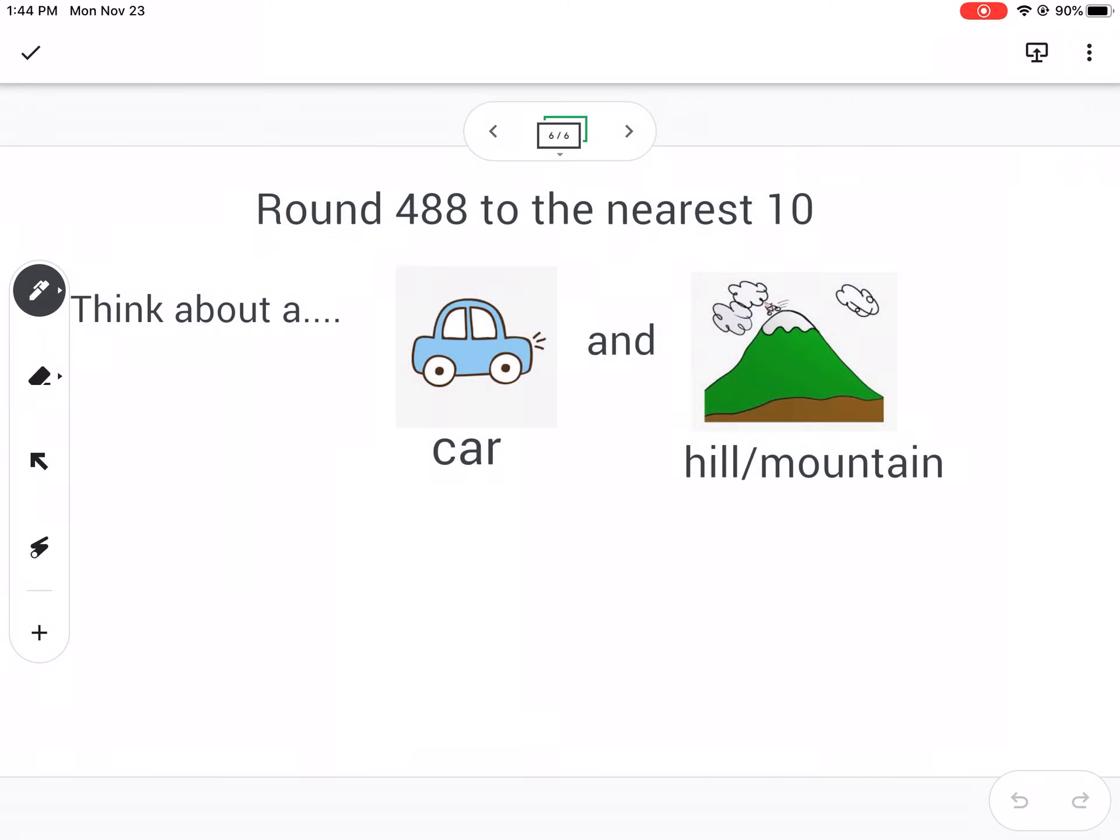We'll do one final example. Again, you're thinking about a car and a hill. Even though it's a three-digit number, we can use the same thinking. 488. If we make our hill and we're thinking what friendly numbers are in between the 488, and we're thinking about it in tens, so we're really looking at this 88 here. Well, 88 is between 80 and 90. And then you can bring in the four. So 480, 490. And right in the middle would be 485.